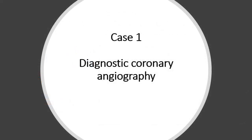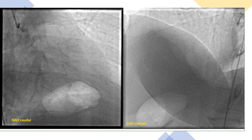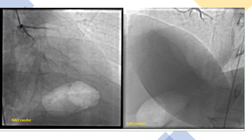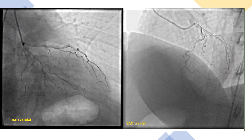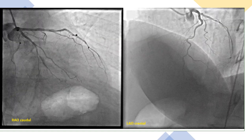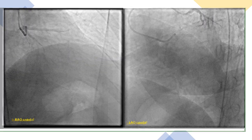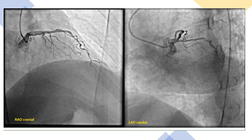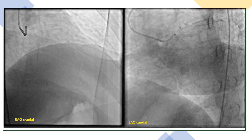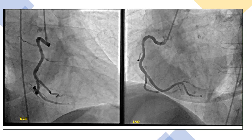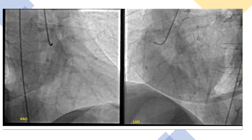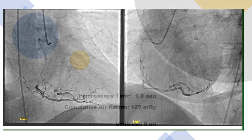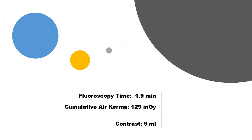Moving on to some examples, we will start with a case of diagnostic coronary angiography. After adjusting the isocenter, we took our images — these are our initial simultaneous RAO caudal and LAO cranial views. We then adjust the image intensifiers and take the other two orthogonal shots: RAO cranial and LAO caudal views. We engage the right coronary artery and take two orthogonal views — straight RAO and LAO. Fluoroscopy time in this case was only 1.9 minutes, and we only used 9 cc's of contrast for the whole case.